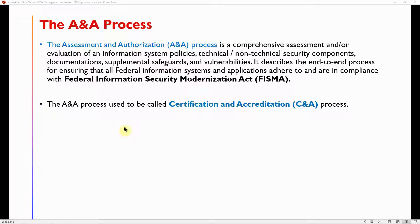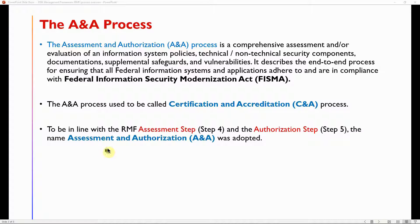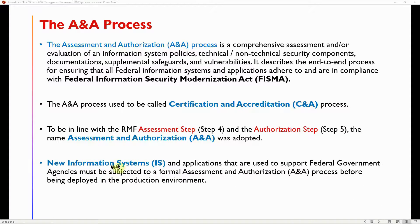The A&A process used to be called the Certification and Accreditation, or C&A, process. To align with the RMF's assessment step and authorization step, the name Assessment and Authorization — A&A — was adopted. New information systems and applications used to support federal government agencies must be subjected to a formal A&A process before being deployed in the production environment.